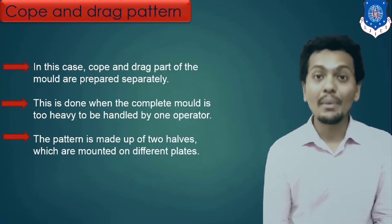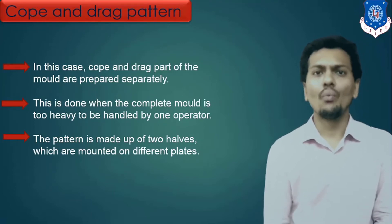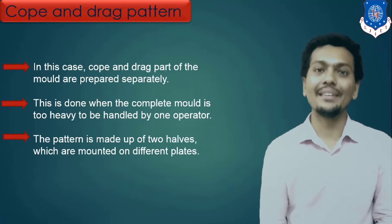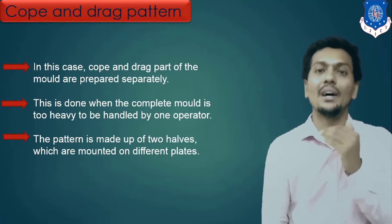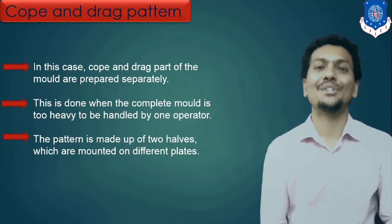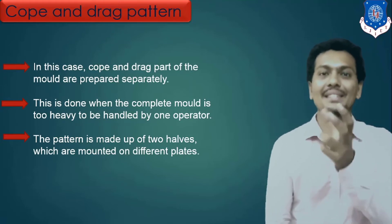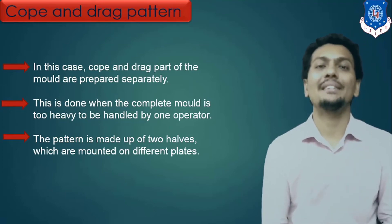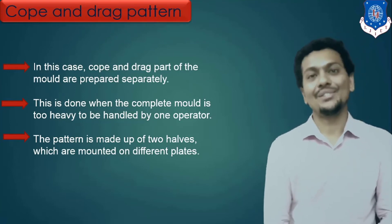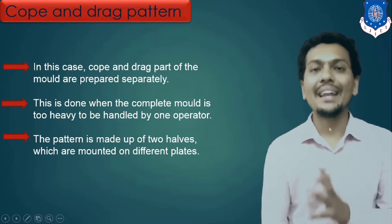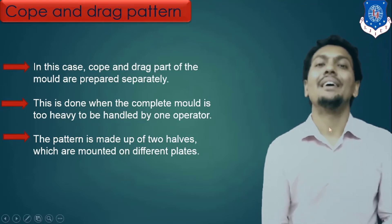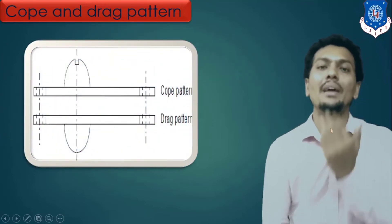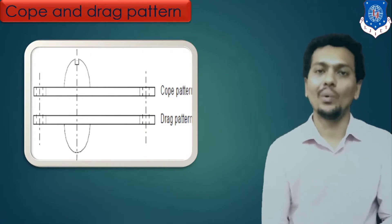After multi-piece pattern, here I mentioned the cop and drag pattern. Cop and drag pattern is nothing but a pattern which has two parts: the upper part is known as the cop and the lower part is known as the drag. In any casting process, the upper part of the casting is known as the cop part and the lower part is known as the drag part. So cop and drag pattern is a simple pattern made of two parts — upper and lower.